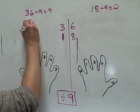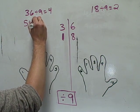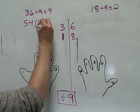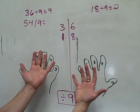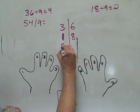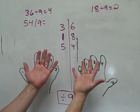Let's try another one. 54 divided by 9. This time we need to make 54. So we need 5 up on this side. And 4 up on the other side.